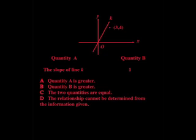And we're asked to compare two quantities. Quantity A is the slope of line k, and quantity B is 1. We pick A if quantity A is greater, B if quantity B is greater, C if the two quantities are equal, and D if the relationship cannot be determined from the information given.